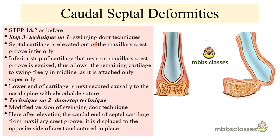In the doorstop technique, it is a little different from the swinging door technique. The septal cartilage is again detached from the maxillary crest, but after detaching it, it is displaced to the opposite side of the crest. For example, if a patient has a right-sided caudal deformity, the septal cartilage is dissected out, pushed to the left side, and sutured in place.